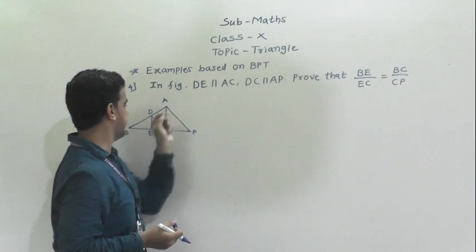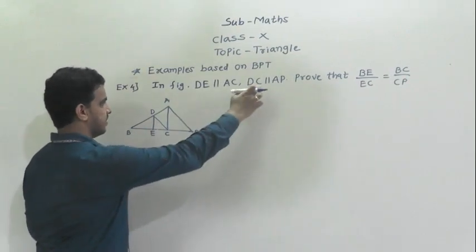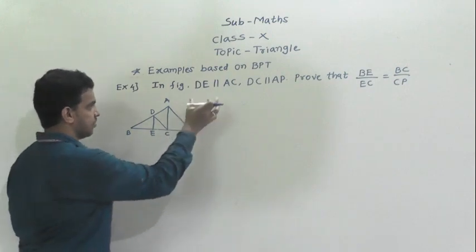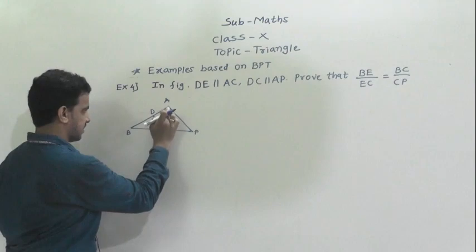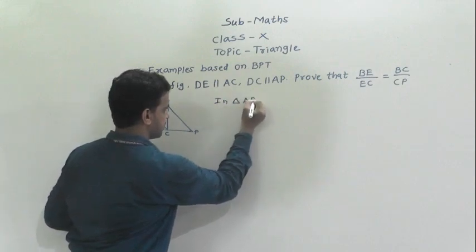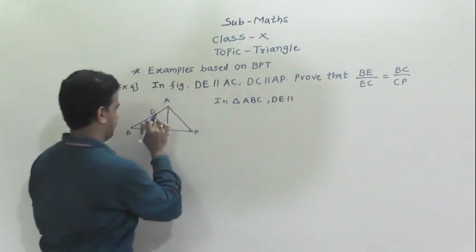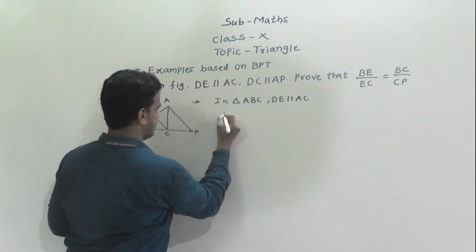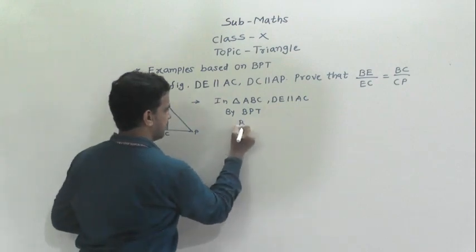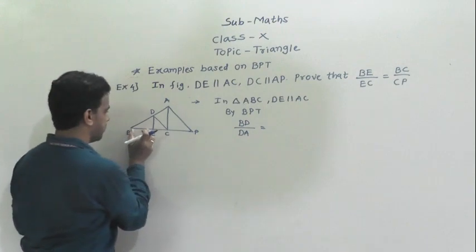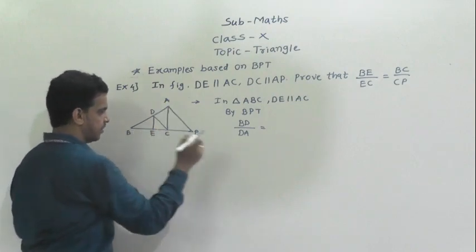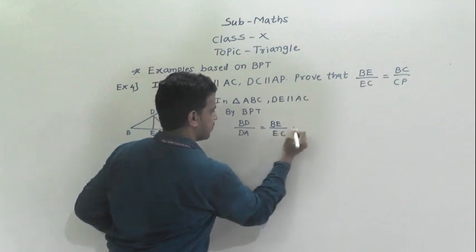Example 4: In the figure, DE is parallel to AC, and DC is parallel to AP. We have to prove that BE by EC is equal to BC by CP. Since DE is parallel to AC is given, we consider triangle ABC. In triangle ABC, DE is parallel to AC. By BPT we can write BD by DA is equal to BE by EC — call this equation 1.